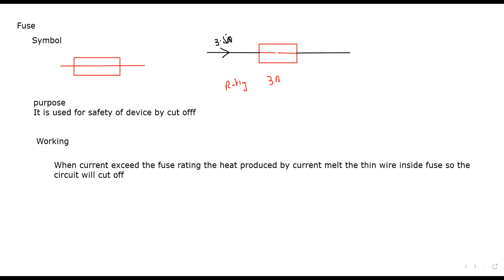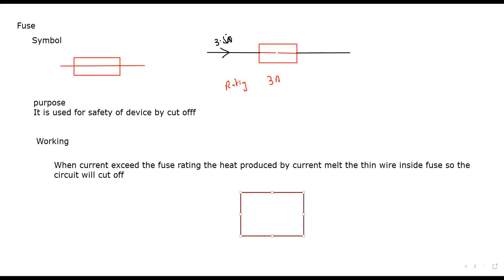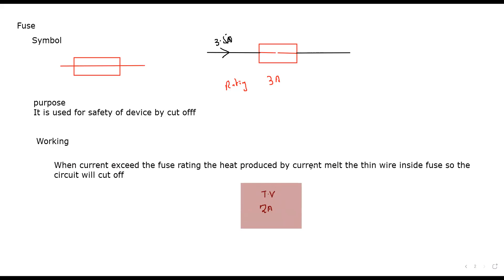For example, you're using your television. Your television circuit requires around 2 to 3 amperes of current to work normally.